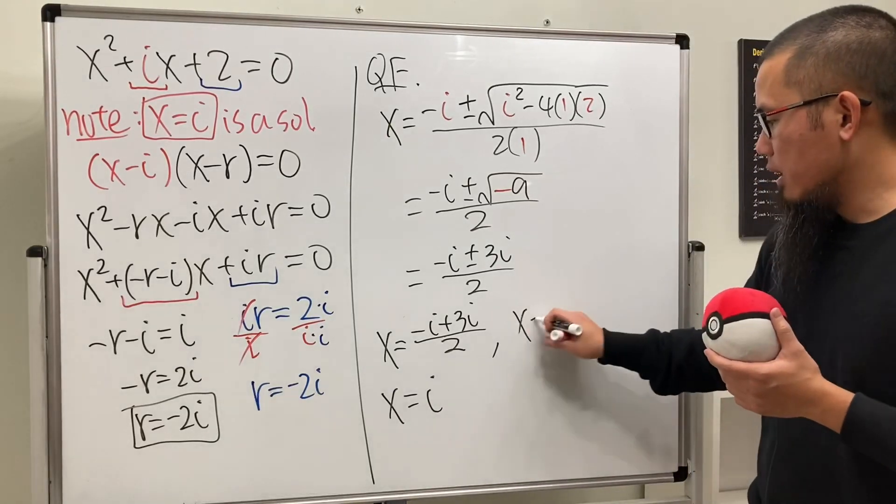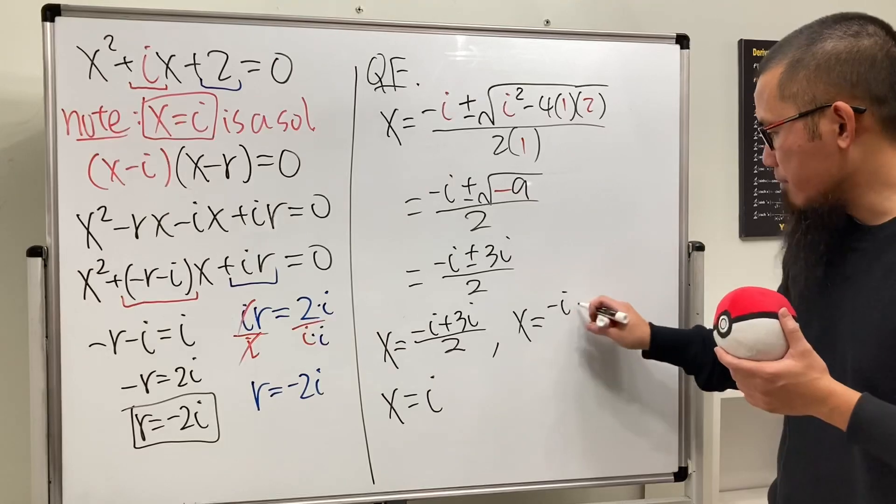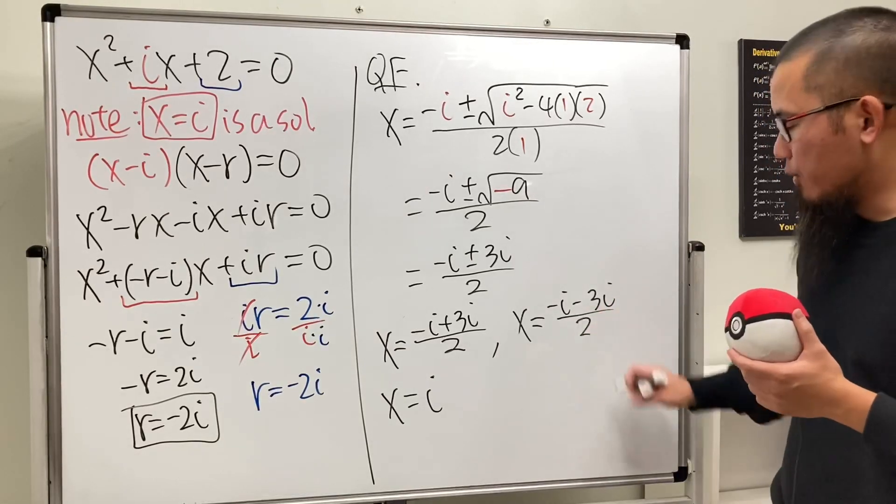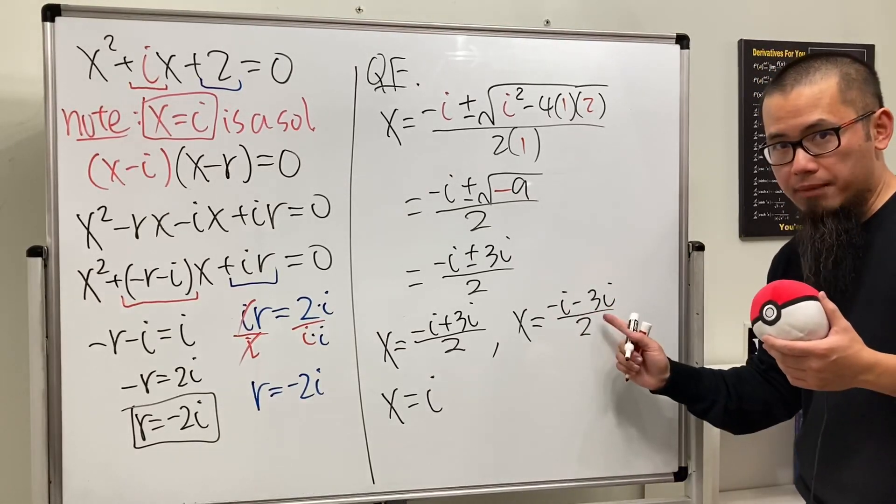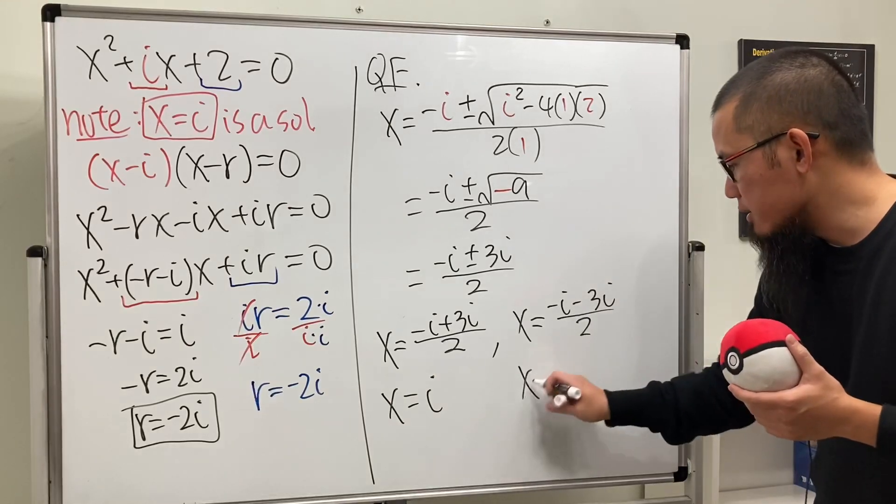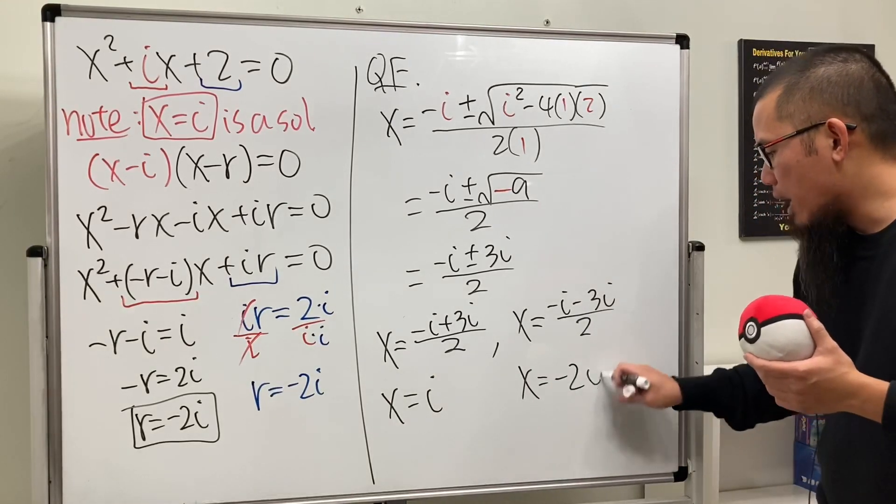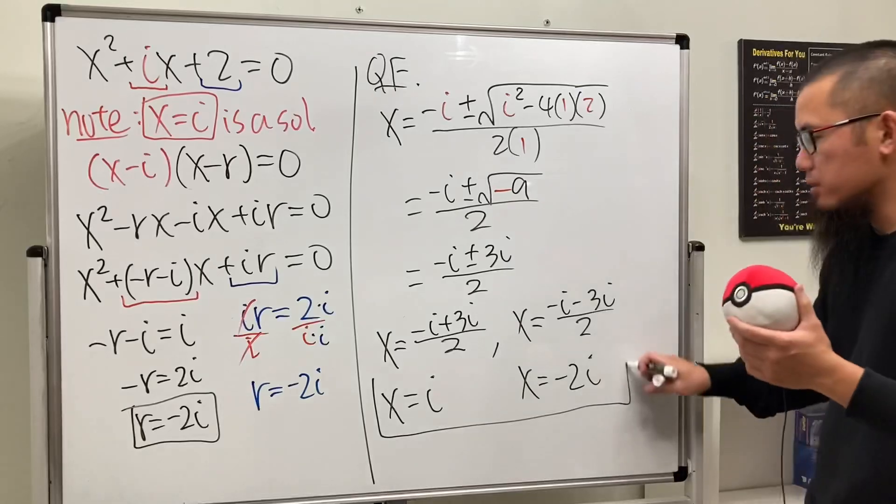And then the second one is just negative i minus 3i over 2, which is negative 4i over 2. And of course we get x equals negative 2i. And of course we have the same answer.